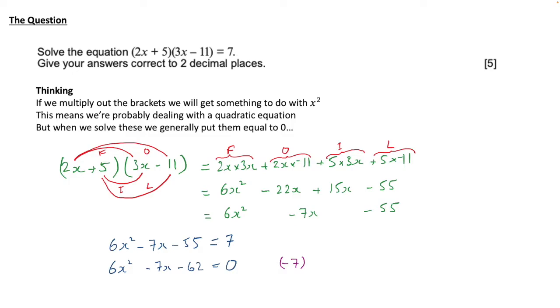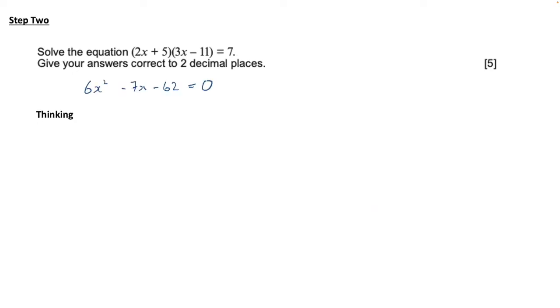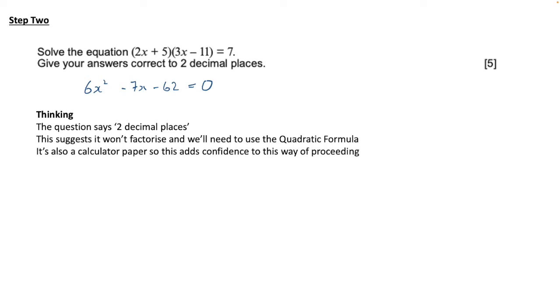So we're all set up now to solve a quadratic equation and we need to do a bit more thinking. The question says two decimal places. Now this suggests that it won't factorise and that we'll need to use the quadratic formula and also, because it's a calculator paper, this adds confidence to this way of proceeding.